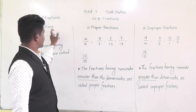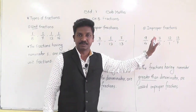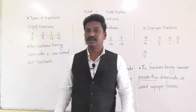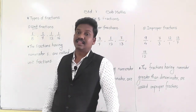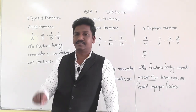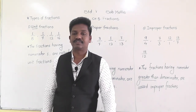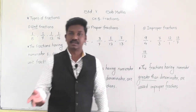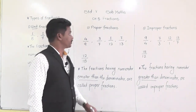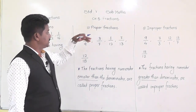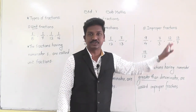So these are three types: unit fractions, proper fractions, and improper fractions. In last standard, we also learned like fractions and unlike fractions — like fractions means having same denominators, unlike fractions means having different denominators. Those two simple types we learned in earlier classes. Unit fractions, proper fractions, and improper fractions are some more advanced types of fractions.